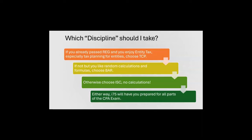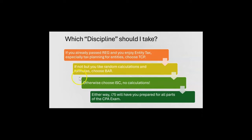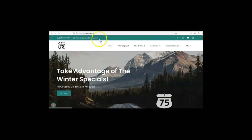especially tax planning for entities, choose TCP. If not, but you already passed FAR and you like random calculations and formulas, then choose BAR — Business Analysis and Reporting. Otherwise, choose ISC — Information Systems and Controls — no calculations at all. Either way, i75 will have you prepared for all parts of the CPA exam. Just go to i75CPAreview.com — we always have a special.